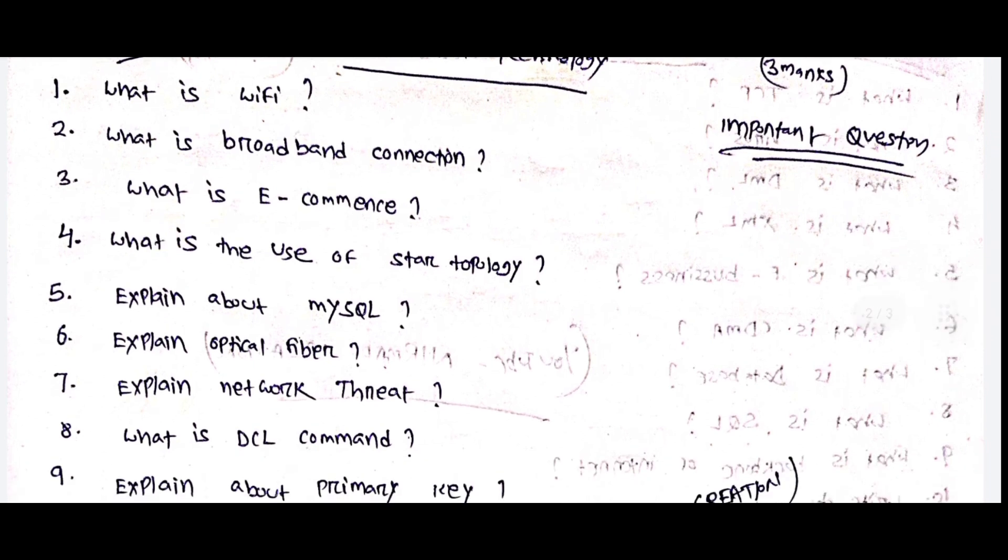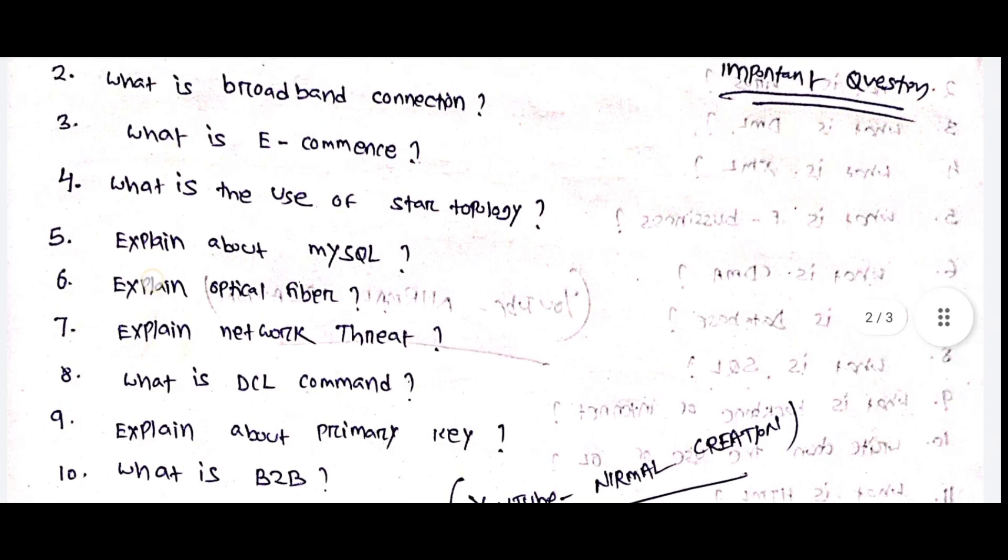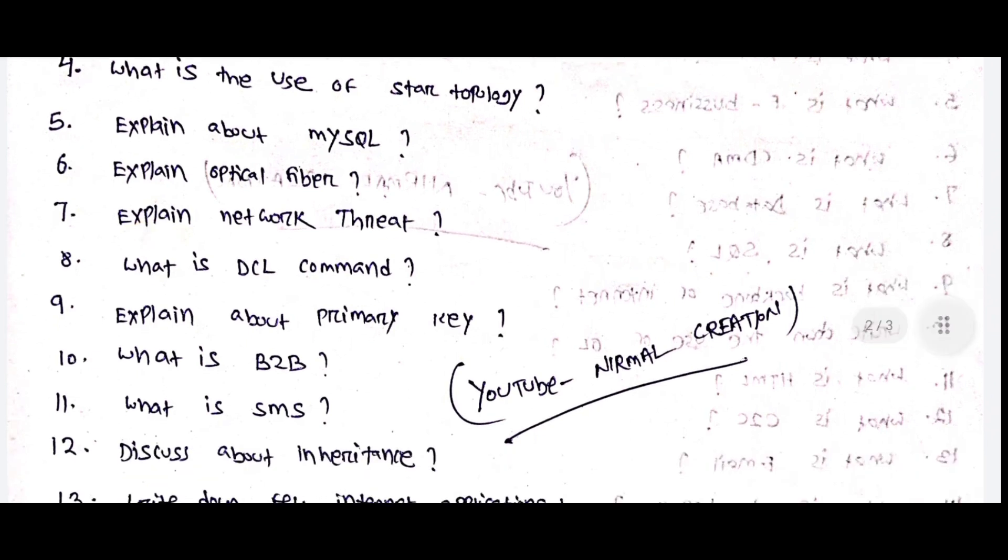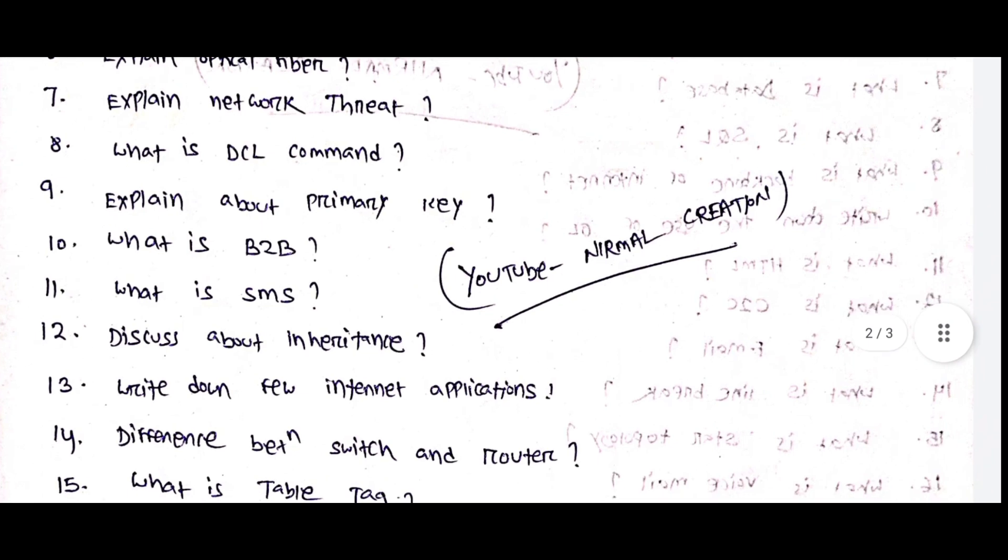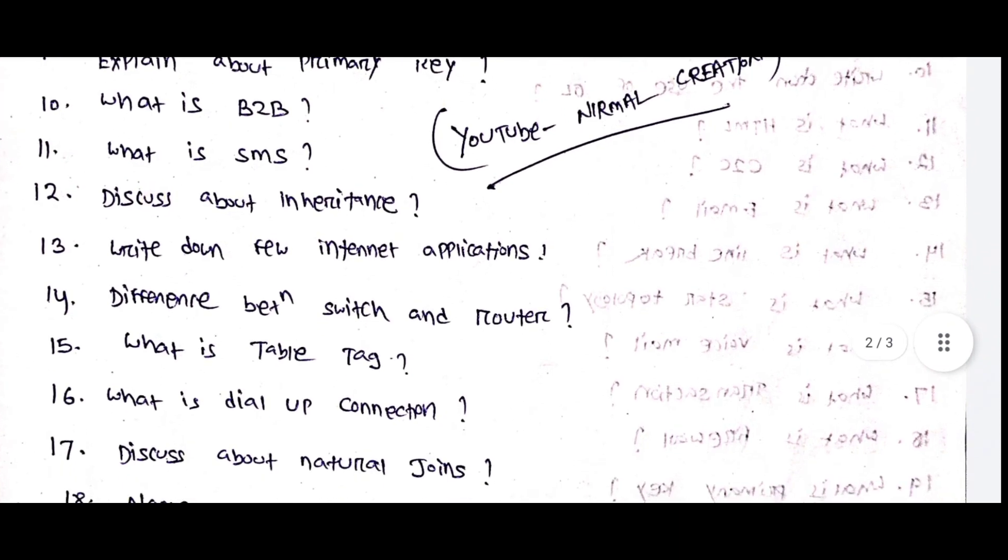What is WiFi? What is broadband connection? What is e-commerce? What is the use of star topology? Types of topology? Explain about MySQL. Explain optical fiber. Explain network threat. What is DCL command? Explain about primary key. What is B2B? What is SMS?